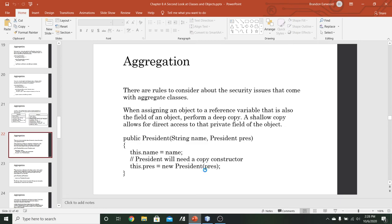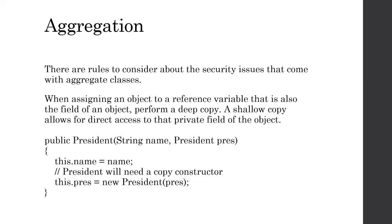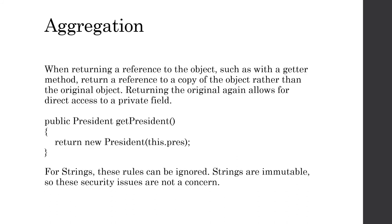That covers the first security issue: whenever assigning an object to a reference variable that is also a field of an object, we must perform a deep copy. A shallow copy allows direct access to that private field — as demonstrated, using a supposedly independent reference to the same object allowed modifying the private data, which we want to prevent.